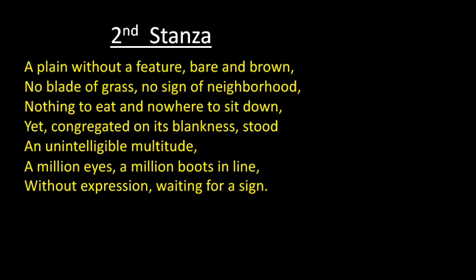Second Stanza of the poem 'The Shield of Achilles': 'A plain without a feature, bare and brown, no blade of grass, no sign of neighborhood, nothing to eat and nowhere to sit down. Yet congregated on its blankness stood an unintelligible multitude.' This stanza reflects the poor relationships between human beings in modern society and modern human civilization, and the fall of morality in the modern human society.